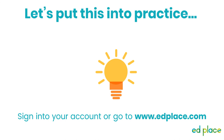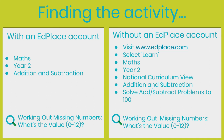In a moment I'm going to direct you to an activity you can use to practise what we have just learned. You will need to either sign into your account or go to www.edplace.com. The activity we are looking for is called 'Working out missing numbers, what's the value 0 to 12?' If you have an EdPlace account, go straight to maths. If you don't, go to the learn tab and then maths on the EdPlace website. Then go to year 2, select the curriculum tab, and go to addition and subtraction. This will open a group of activities — look through and choose 'Working out missing numbers, what's the value 0 to 12?' If you're struggling to find this activity, please visit our support site for a quick walkthrough on how to locate activities.